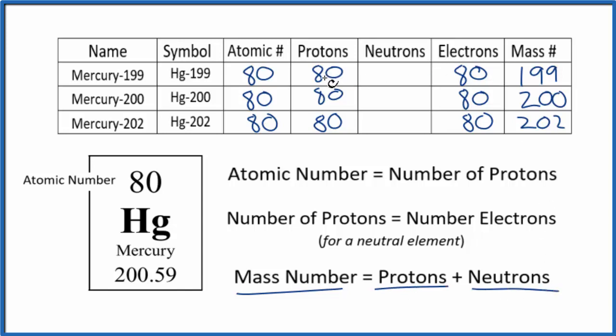So 80 plus something gives us the mass number. 80 plus 119 would give us 199, so Mercury-199 has 119 neutrons. For Mercury-200, 80 plus 120 would give us 200. And Mercury-202 would be 122 plus 80, giving us 202. So we've figured out the number of neutrons for mercury based on the mass number which we found in this notation here.